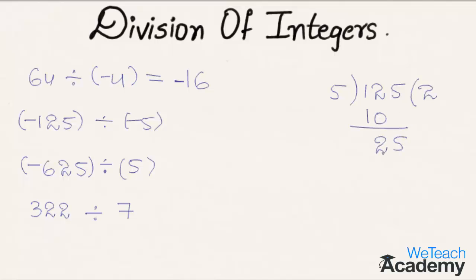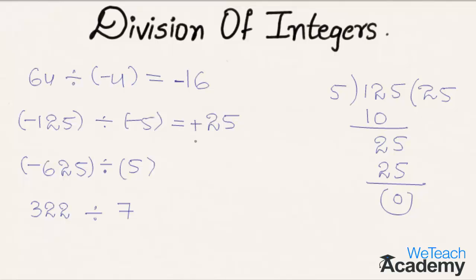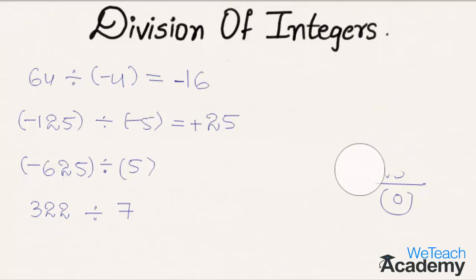Bringing down the next digit 5, we get 25. Again, 5 five times is 25, so 25 minus 25 is 0. We get the result as 25. The signs are the same, so we get the result as positive: 25.